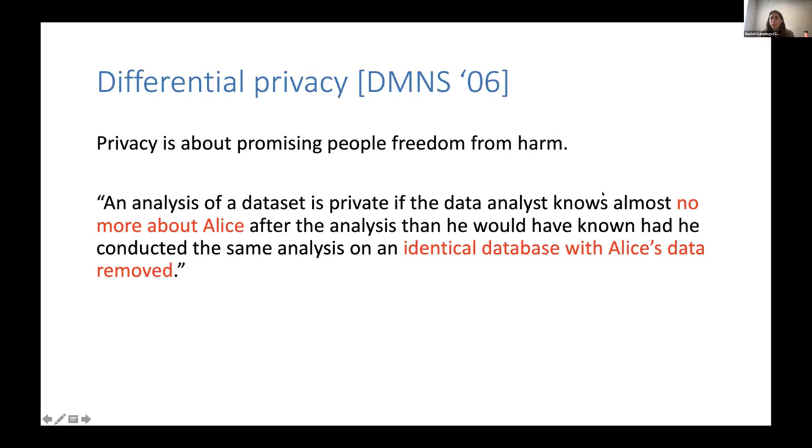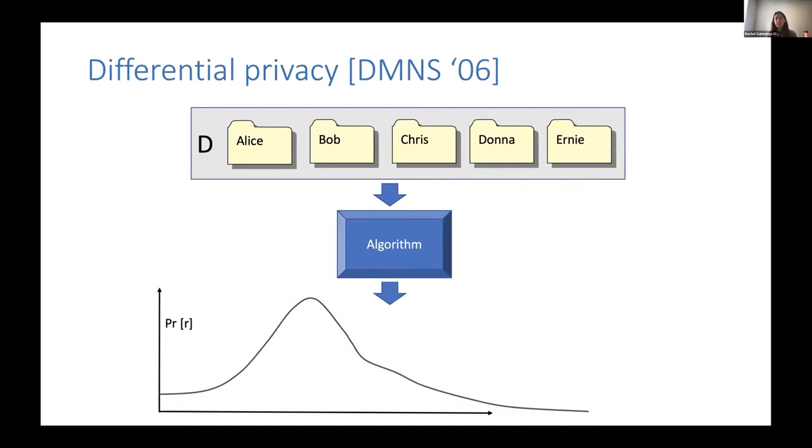And this expression here, almost no more, gives us a privacy parameter. How much is almost? A little bit more precisely in pictures, imagine if you take your favorite data set and plug it into your favorite algorithm. And let's say this is a randomized algorithm. This is going to produce a PDF of the outputs. And so this says, on the x-axis, imagine all possible things that may be produced as a result of this algorithm. It may be the correlation between smoking and lung cancer. It may be targeted ads for you. And on this y-axis, we're going to have the probability of having that thing occur as a result of this algorithm instantiated on this particular database.